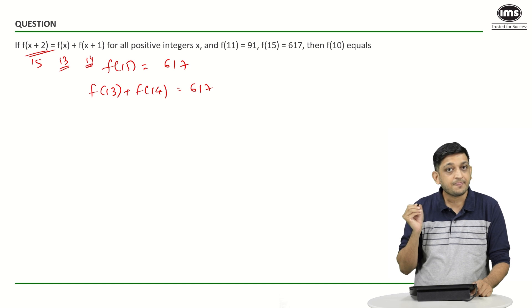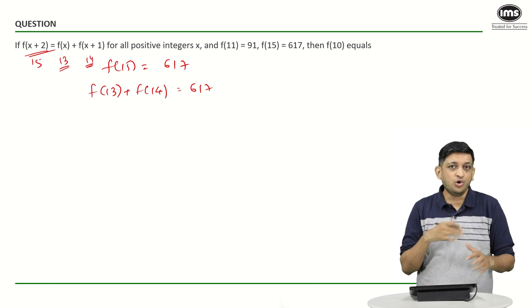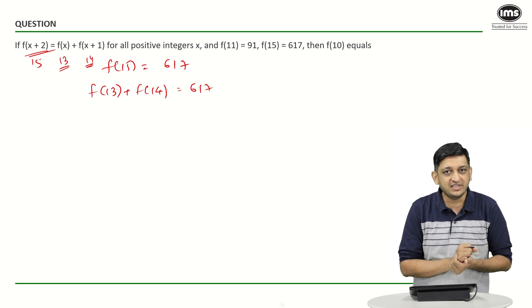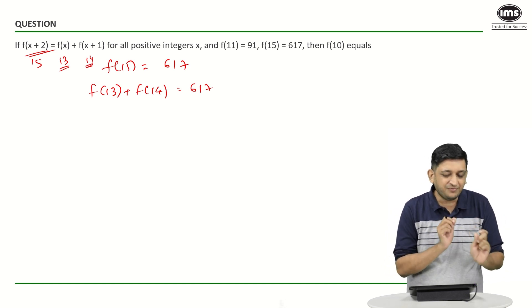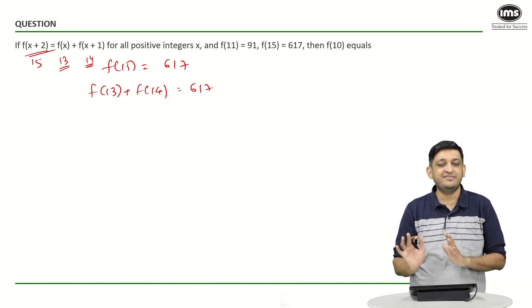But do we know what is the value of f(13) and f(14)? We do not know in this case. So we have to go backwards, we have to go till the time we can figure it out in the form of f(11) and f(10) and we should be fine.